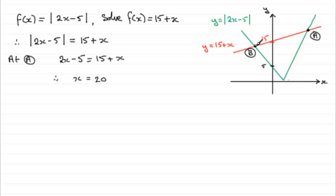And, we can get the other solution then at B. So, if we take B at B, we have this graph, okay, intersecting the red graph. Now, this graph will be the negative of 2x - 5. In other words, -2x + 5. So, at B, we've got -2x + 5